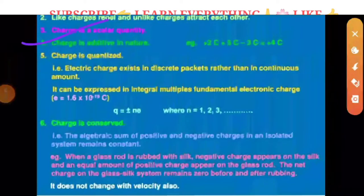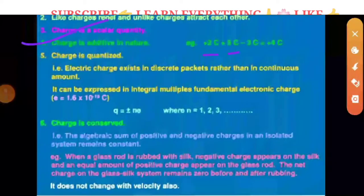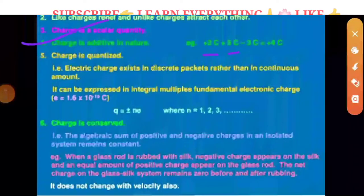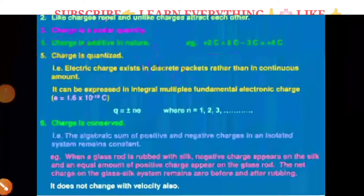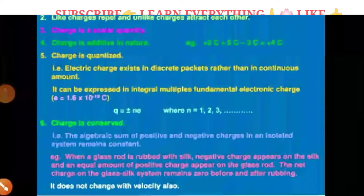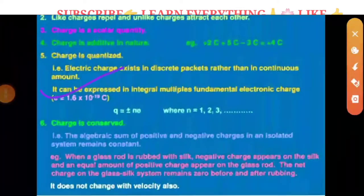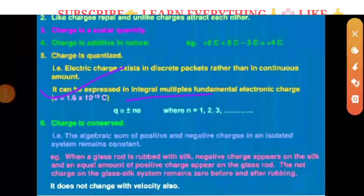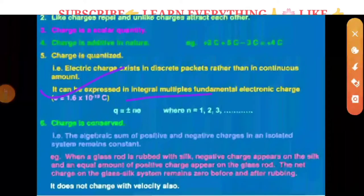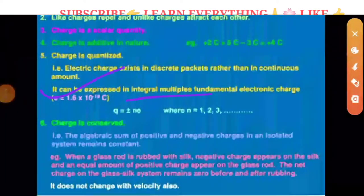Additive nature - additive is like plus 2 plus 5, or 5 plus 2 minus 3, so 5 plus 2 is 7, 7 minus 3 is 4. This is additive nature. If you can add it, you can add it. A very important property is that charge is quantized. We can express it as integral multiples of fundamental electronic charge, Q equals plus or minus n times E.